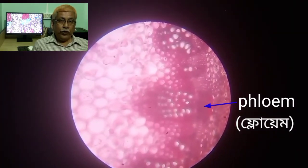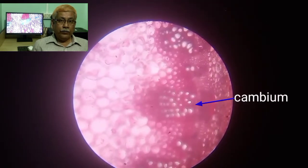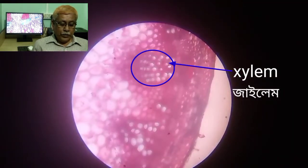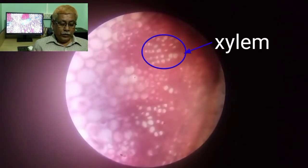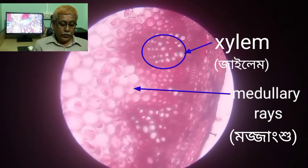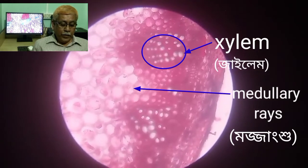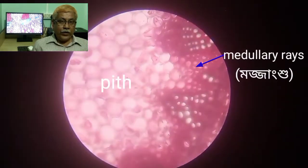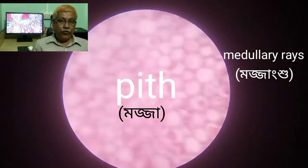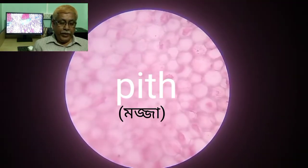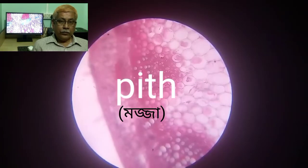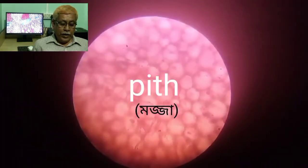Cortex and endodermis are visible. Now see the phloem tissue — phloem tissue is clearly visible. Now cambium. Xylem — xylem tissue is clearly visible. Medullary rays are seen. Medullary rays and pith. Pith region is clearly visible.